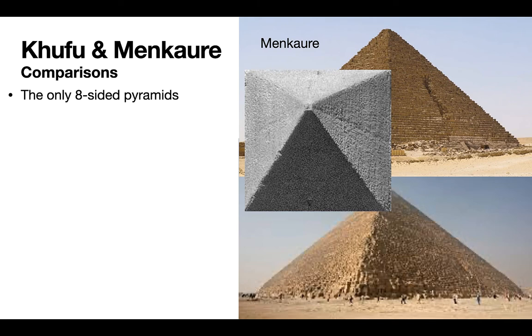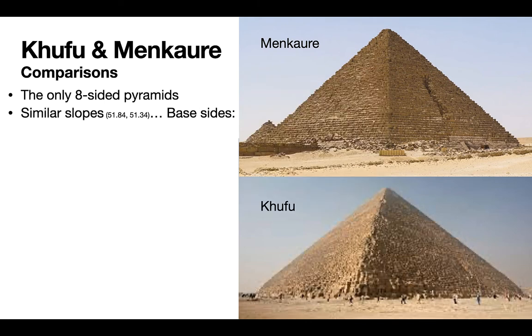You might have heard it said that the Great Pyramid's eight sides only show up on the equinoxes, from the air. That's an urban legend. You can see those eight sides in many different settings. I've seen them when I've been to Giza.